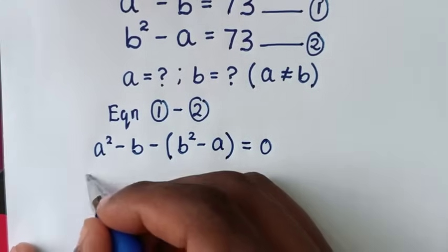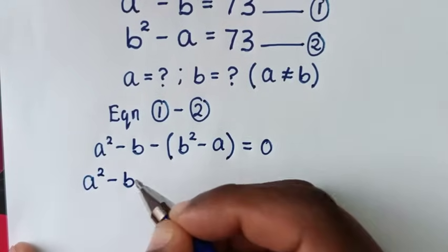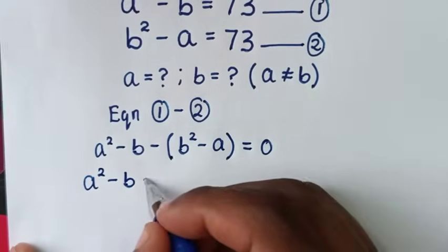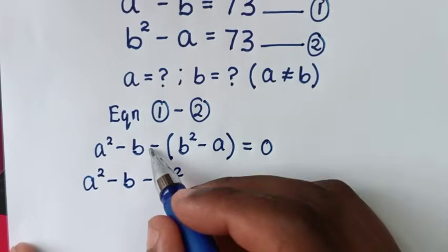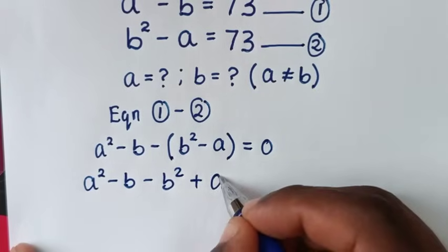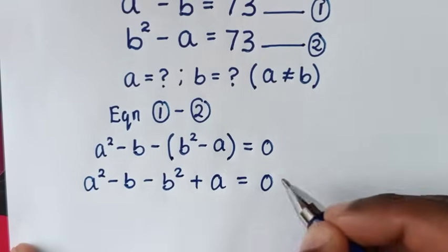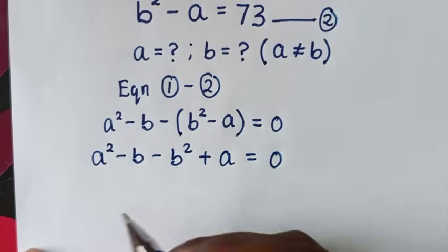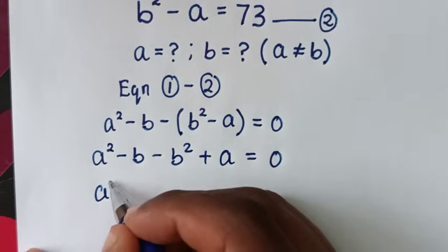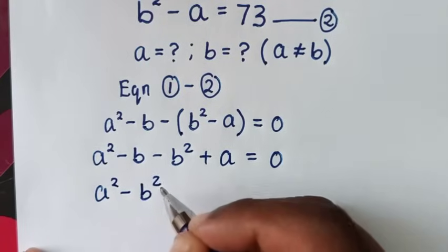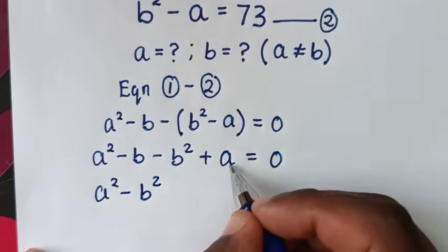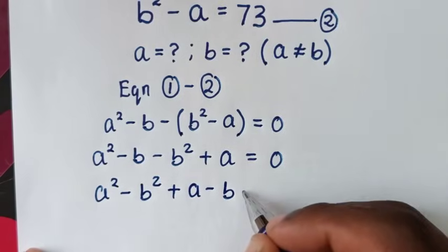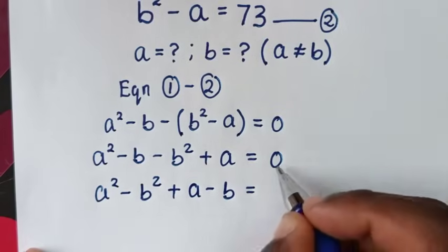From here, it will be a squared minus b, then we take the minus inside the bracket, so it will be minus b squared. Minus and minus gives plus a, equal to 0. Then, we group this as a squared minus b squared, plus a minus b, equal to 0.